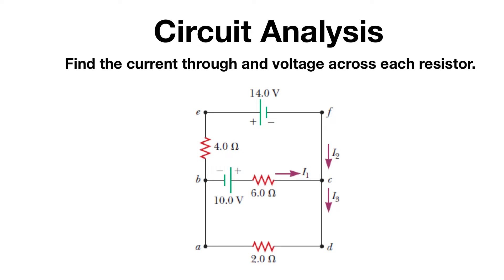What's up everybody? Today we have a circuit analysis question with two batteries in it. We're going to use Kirchhoff's laws to set up and solve this problem. When we only have one battery it's usually easier to find the equivalent resistance and proceed that way, but with multiple batteries you're kind of forced to use Kirchhoff's laws to solve.